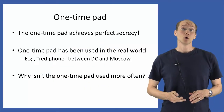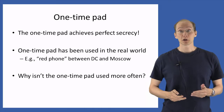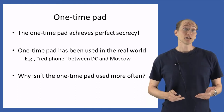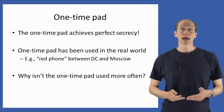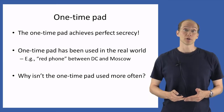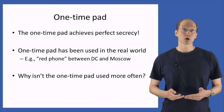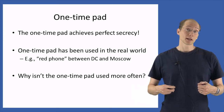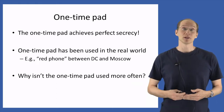In the last few lectures, we've explored the one-time pad encryption scheme and shown that it achieves our definition of perfect secrecy. The one-time pad has been used in the real world. A famous example is the red phone that connected Washington DC and Moscow in the 1980s, where the keying material was shared by trusted couriers who would take suitcases full of printouts of bits and carry them between the two parties.